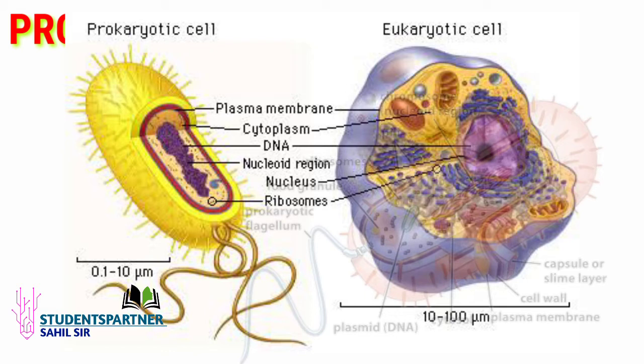Prokaryotic cells also have cell wall and plasma membrane. Since there is no mitochondria, the energy produced through respiration comes directly from the cytoplasm. This was about prokaryotic cells. Their size is 1 to 10 micrometers, the nucleus is not well-developed, and chromosomal material consists of a single chromosome.